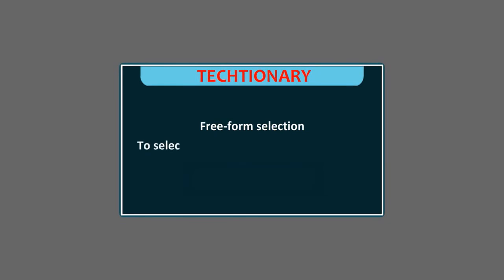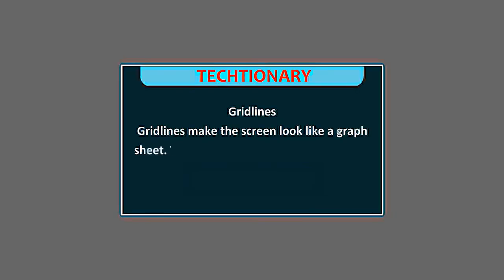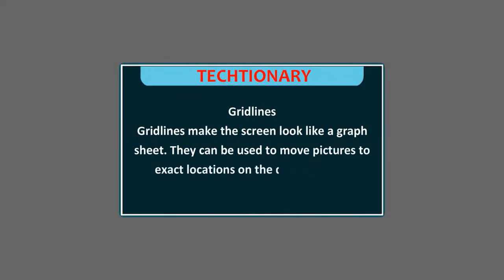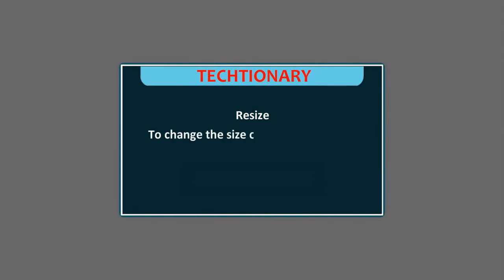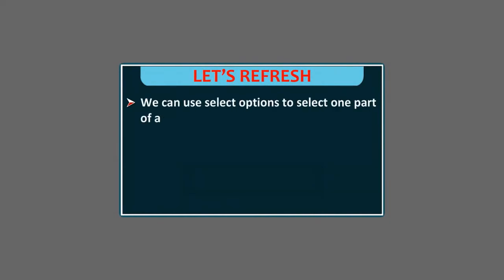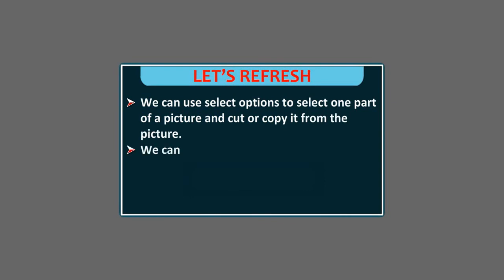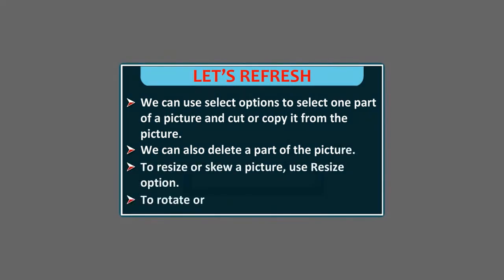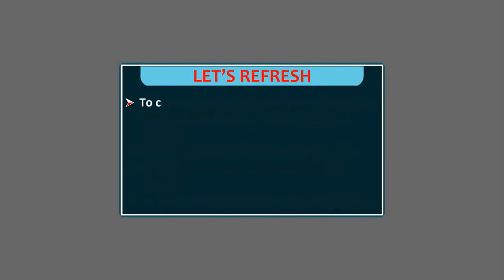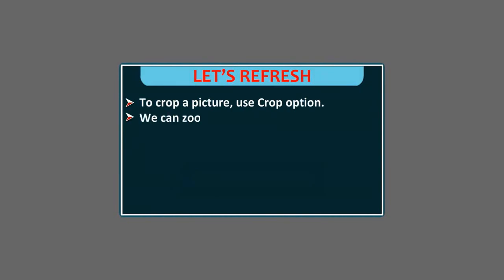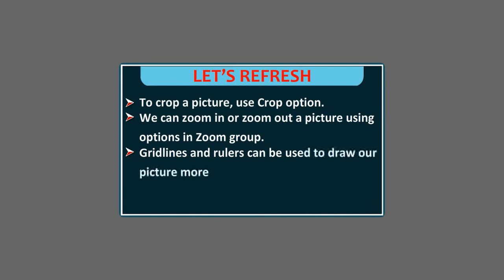Let's Refresh: Freeform Selection is used to select any irregularly shaped part of the picture. Gridlines make the screen look like a graph sheet and can be used to move pictures to exact locations on the drawing area. We can use select options to cut or copy one part of a picture, or delete a part of it. To resize or skew a picture, use the Resize option. To rotate or flip a picture, use the Rotate option. To crop a picture, use the Crop option. We can zoom in or zoom out using options in the Zoom group. Gridlines and rulers can be used to draw our picture more precisely. We can also set our drawing as a Desktop Background.